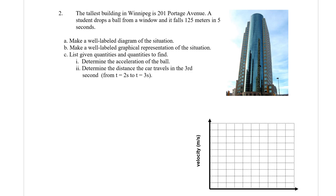Hi, and welcome to question number two, part two of the Quantitative Acceleration Problems worksheet. In this case, the tallest building in Winnipeg is 201 Portage Avenue. It's a building in need of a better name, it's just the address here.